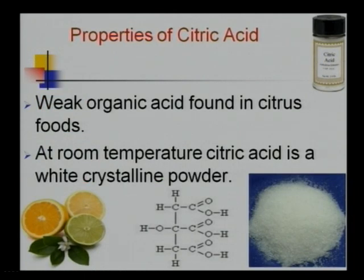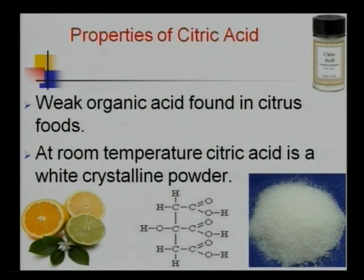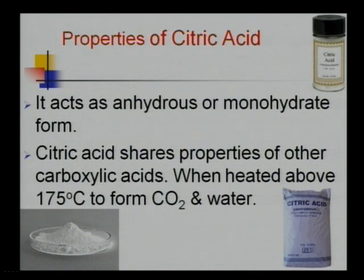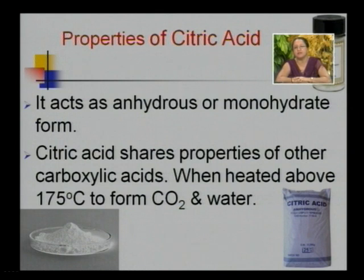Discussing the properties of citric acid: citric acid is a weak organic acid found in citrus fruits belonging to the genus Citrus and the family Rutaceae. Lemon, orange, sweet lime, grapes, etc. are used for production of citric acid, and it occurs in the metabolism of all living organisms. At room temperature, citric acid is a white crystalline powder. It exists as an anhydrous or monohydrate form that contains one mole of water for every mole of citric acid. It dissolves in absolute ethanol at 15 degrees centigrade. Citric acid shares properties of other carboxylic acids and when heated above 175 degrees centigrade forms CO2 and water.